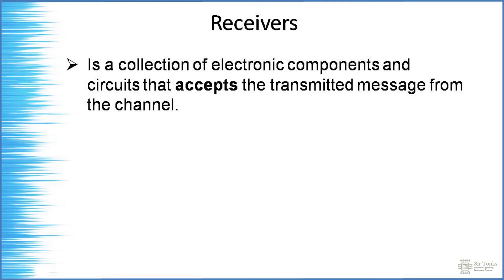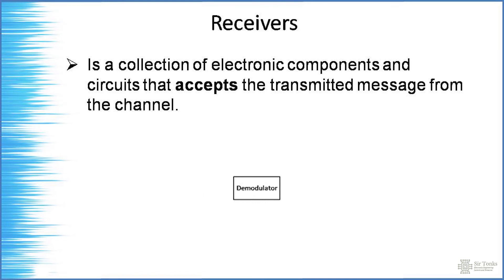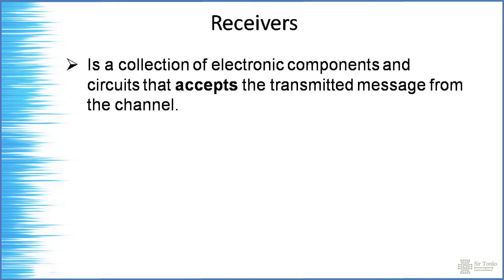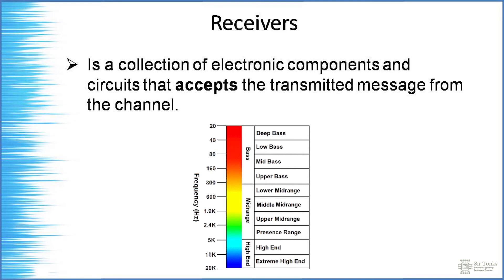The receiver collects the modulated signal from the channel. It is a collection of electronic components and circuits that accepts the transmitted message. Since the received signal is still modulated, the receiver performs demodulation — it removes the high frequency so that only the information signal passes through to the speakers or headphones. It converts the received message back to a form understandable by humans, because our ears cannot handle RF.